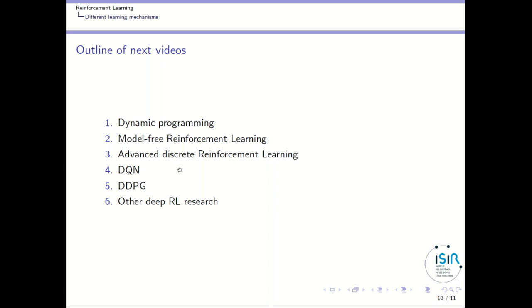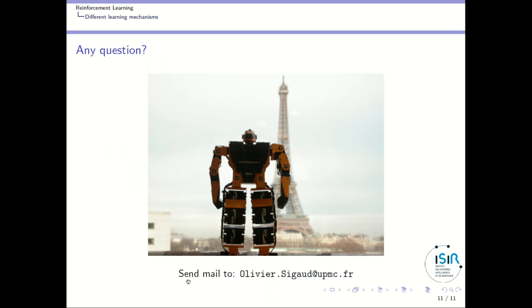And once we will get this background, I will switch to DQN, which is the basic deep reinforcement learning algorithm in the discrete action case, and then to DDPG, which is its counterpart in the continuous action case. And finally, I will give you an overview of other deep reinforcement learning research. If you have an equation, don't hesitate to send me an email. That's my email address if you have a question about any of these videos.